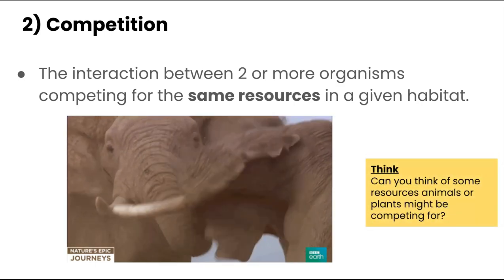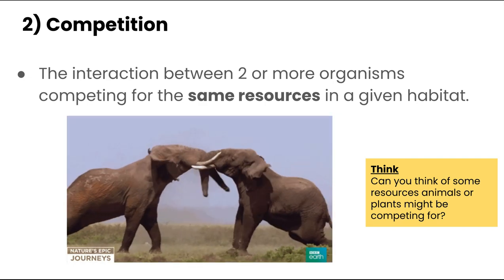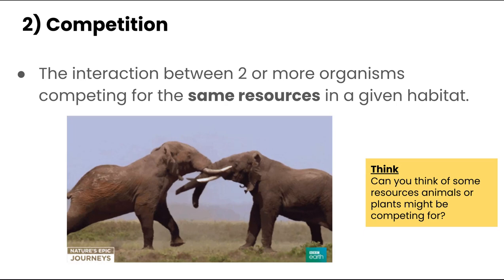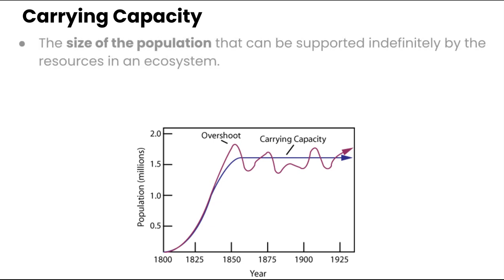Think about this: can you think of some resources animals or plants might be competing for? We also need the term carrying capacity because it goes along with competition. The size of a population that can be supported indefinitely by the resources in the ecosystem is called the carrying capacity.